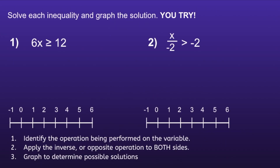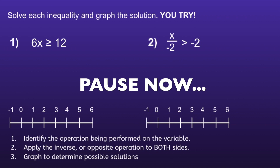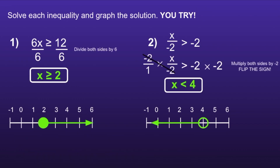I have two more inequalities I want you to solve and then graph the solution. I recommend you pause the video now, solve, and then resume when you're ready to check your answers. Okay, let's take a look. Number 1: the inequality is x is greater than or equal to 2. On the graph, there's a closed circle on 2 and an arrow pointing to the right. For number 2: the inequality is x is less than 4. Since we divided by a negative number, we had to flip the inequality sign. On the graph, there's an open circle at 4 and an arrow pointing to the left. If you had either incorrect, go back and find your mistake.